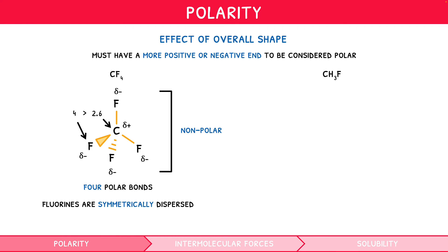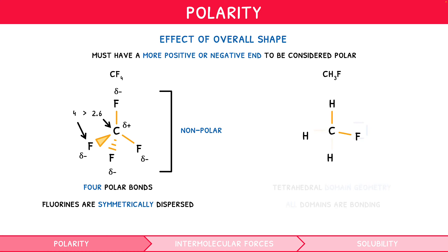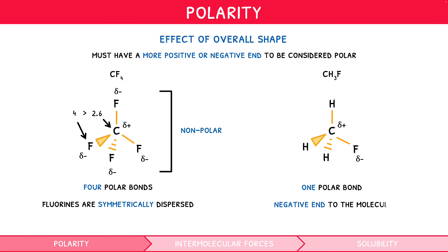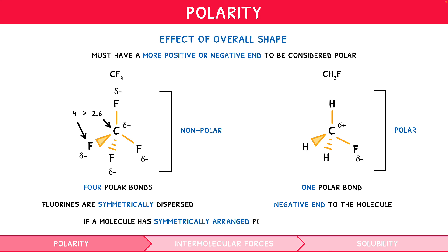The Lewis structure for CH3F also shows 4 electron domains and tetrahedral domain geometry, and since all 4 domains are bonding, the molecule is also tetrahedral. However, only the fluorine bond is considered polar, so it has 1 polar bond. Thus, there is a more negative end to the molecule, and so CH3F is considered polar. A useful tip is that if a molecule has a symmetrical geometrical arrangement of outer atoms, it must be nonpolar.